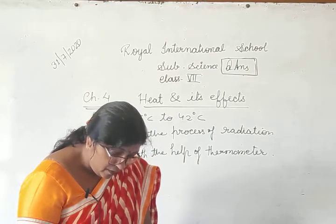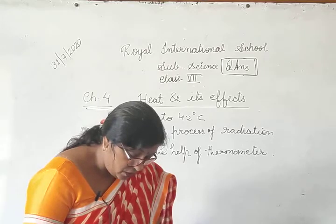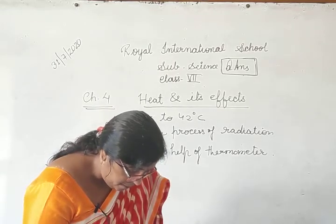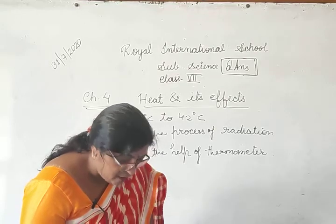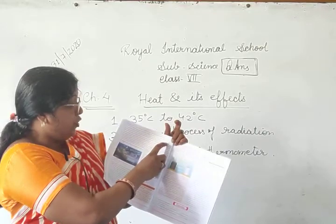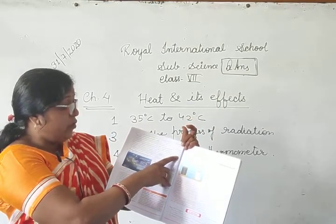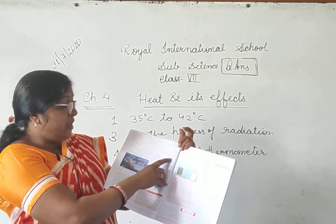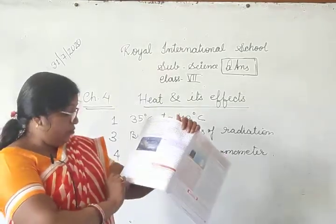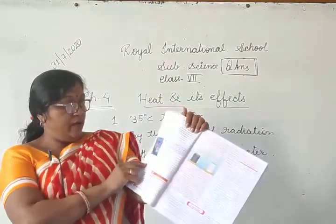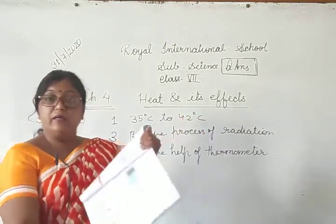Third question: define radiation and give one example of heat transfer by radiation. For radiation, come to page number 42, 6th line: radiation is the process of transfer of heat from a hot body to a cold body without any medium — radiation needs no medium. Example: we feel warm when we sit in front of an electric heater.